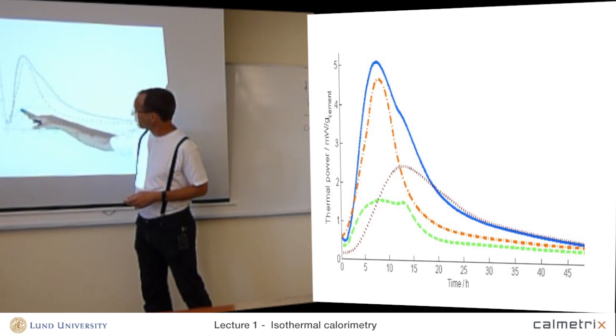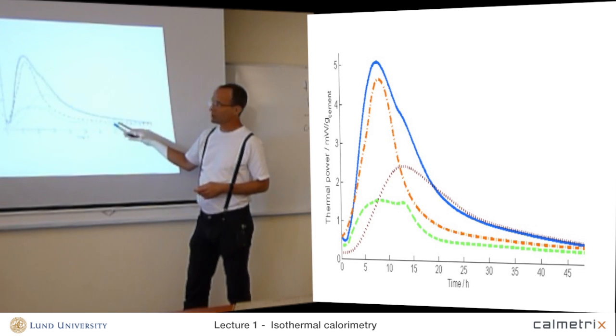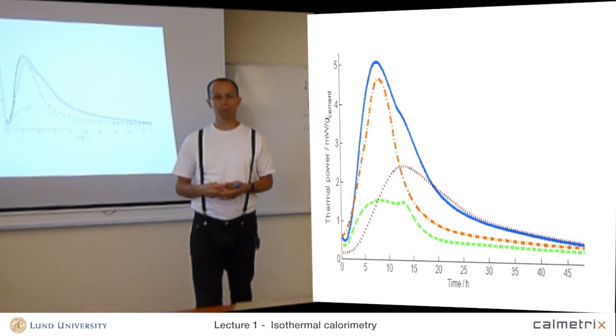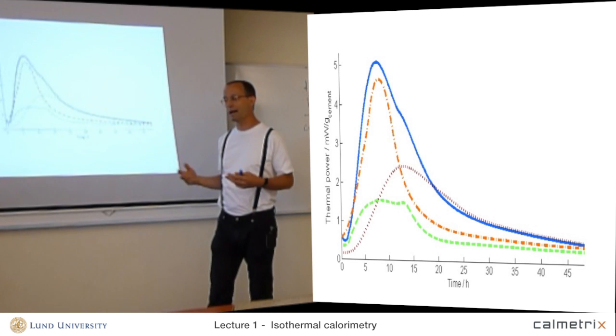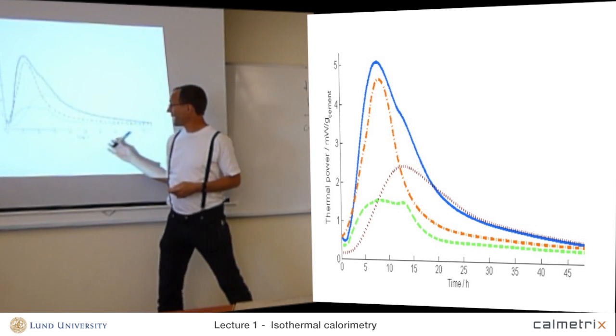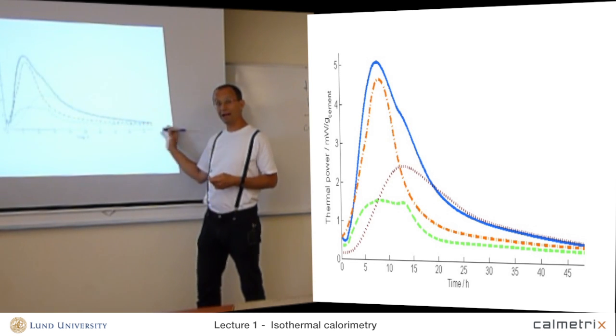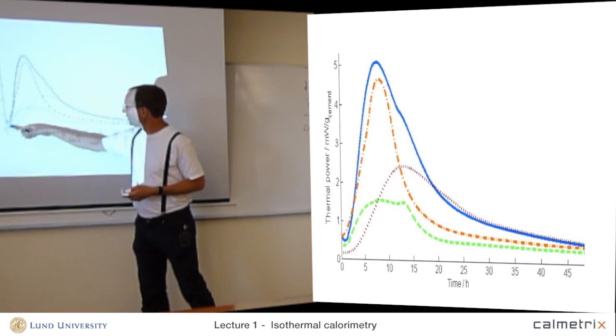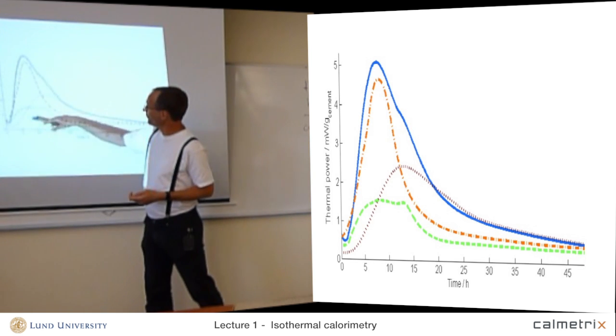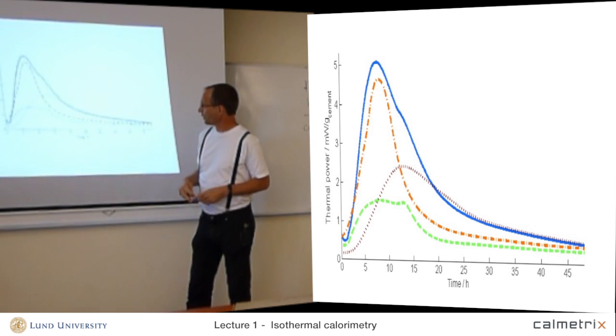The green curve here on the bottom, this is slag cement, so it's not exactly ordinary Portland cement, but it has been diluted with slag, which also reacts, but it reacts much slower. So that reaction is not part of this measurement. This is the reaction of the ordinary Portland cement part.